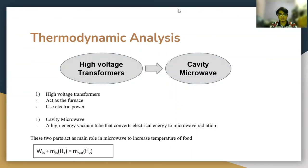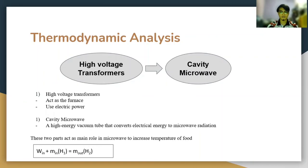For thermal analysis of the microwave oven, there are two main components: the high-voltage transformer and the cavity microwave. The high-voltage transformer works as a power supply that supplies electrical power to the cavity microwave, where electrical energy is converted to electromagnetic radiation. These two parts work together to increase the temperature of the food. We can relate this system to the energy balance equation: mass flow rate in multiplied by enthalpy h₁ equals mass flow rate out multiplied by enthalpy h₂. That's all from us. Thank you.